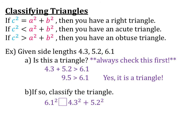Now, if we want to classify the triangle by sides, we're going to need to plug into Pythagorean theorem. So 6.1 is our largest side, so I'm going to put a star above 6.1. That's my hypotenuse, so that's going to be my C. So 6.1 squared, we put a box, because we don't know what kind of symbol is going there, and then 4.3 squared plus 5.2 squared.